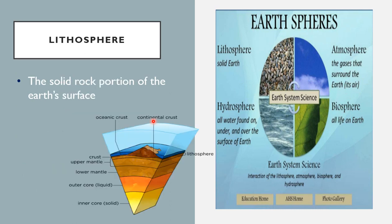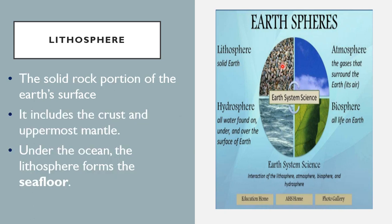The second sphere is the lithosphere, which we mentioned before as one of the layers inside the Earth — the upper mantle, which is cold and brittle, a solid rock portion of the Earth's surface. The lithosphere includes the crust and the uppermost mantle. Under the ocean, the lithosphere forms something called the sea floor.